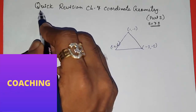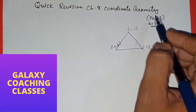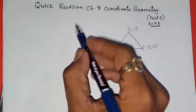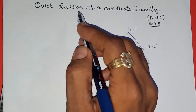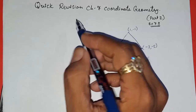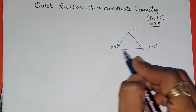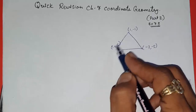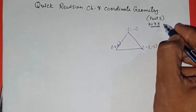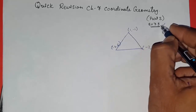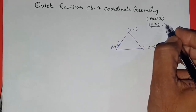Hello friends, today we are going to do a quick revision of chapter number 7 coordinate geometry part 2. In part 1 we had studied about the distance formula, section formula, and midpoint formula. Now we are going to study how to find the area of a triangle when three coordinates are given, and then we are going to do a quick revision of exercise 7.3, NCERT class 10th mathematics.